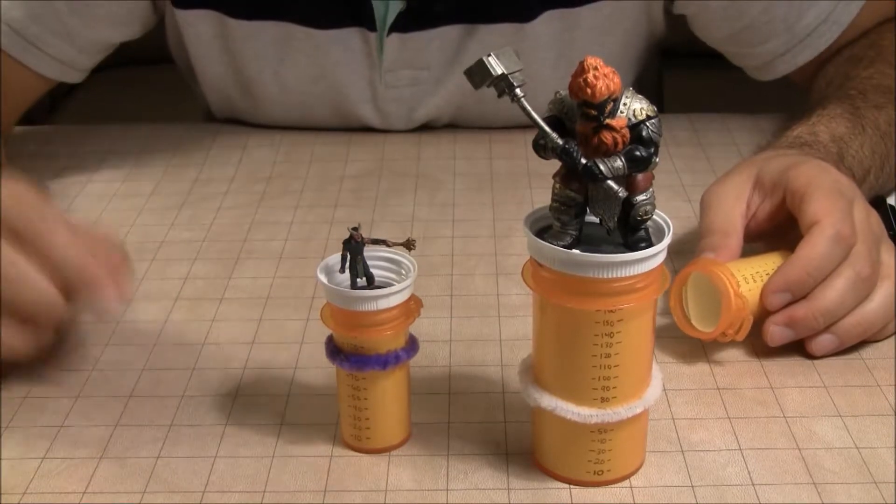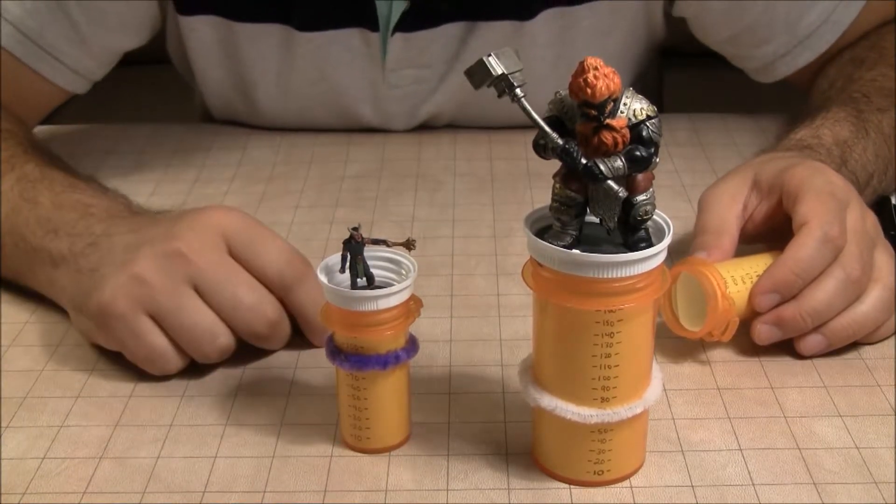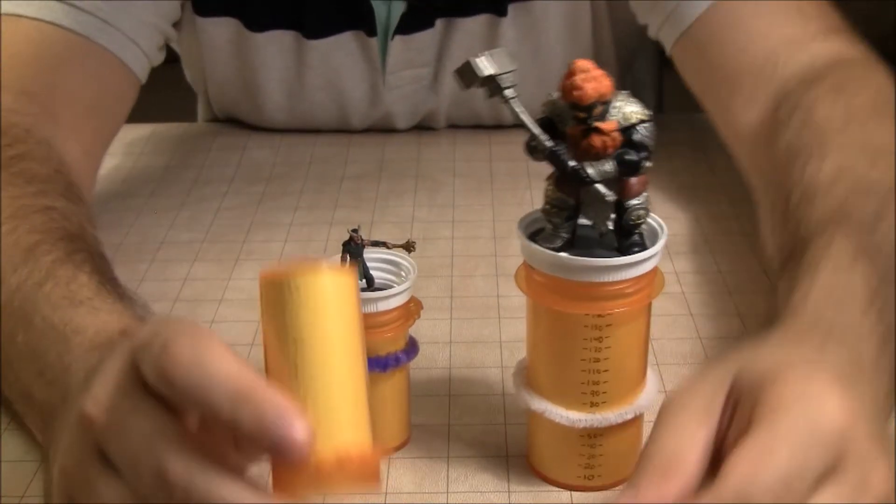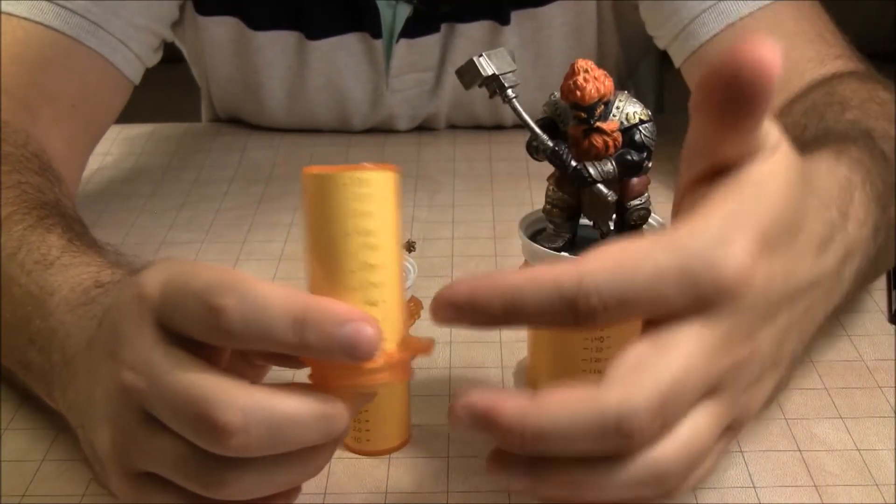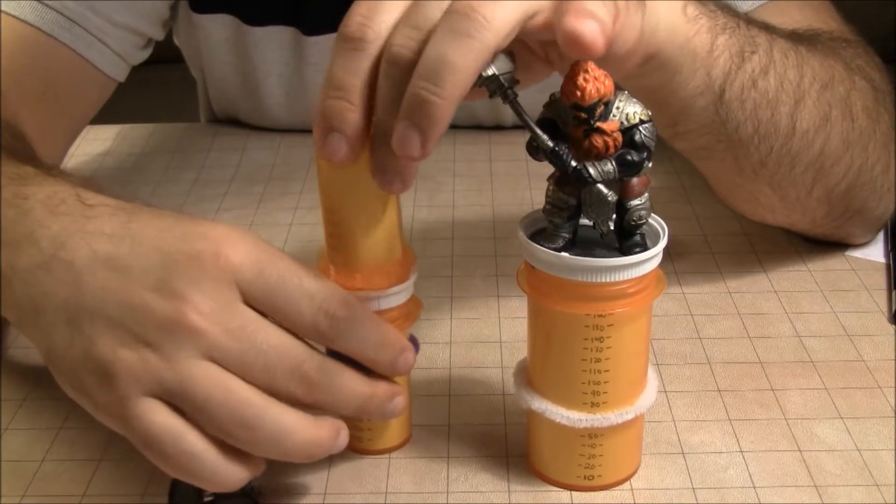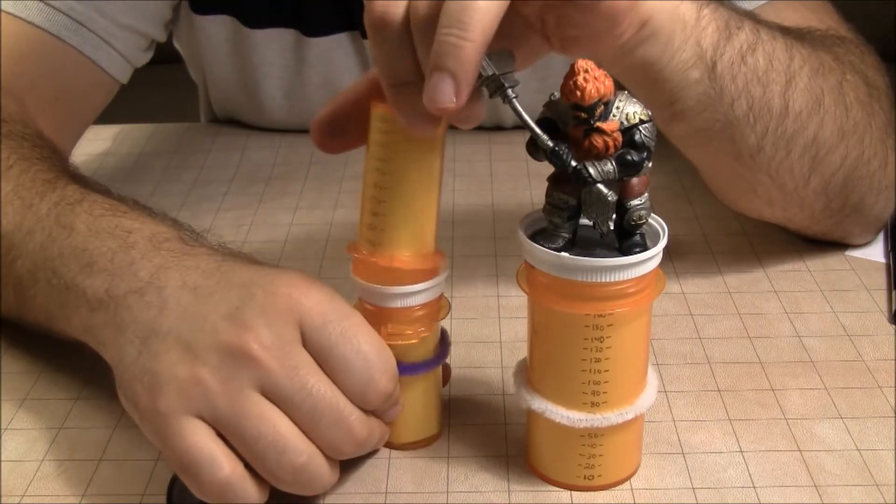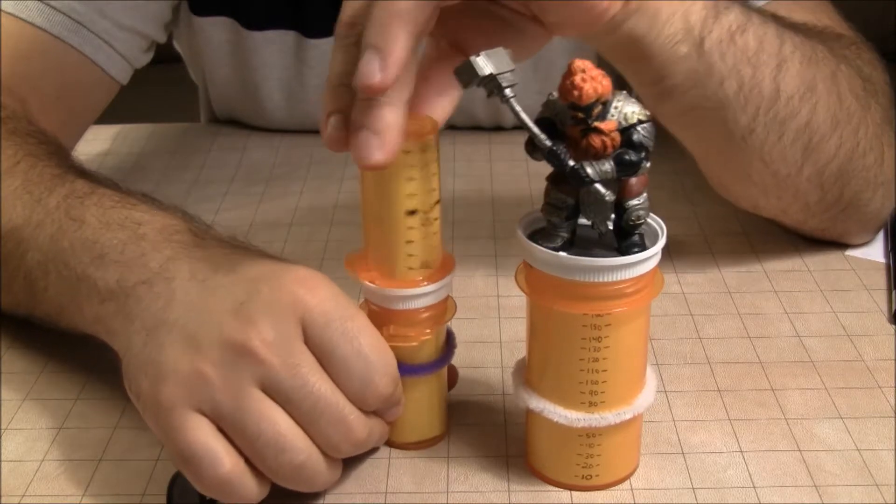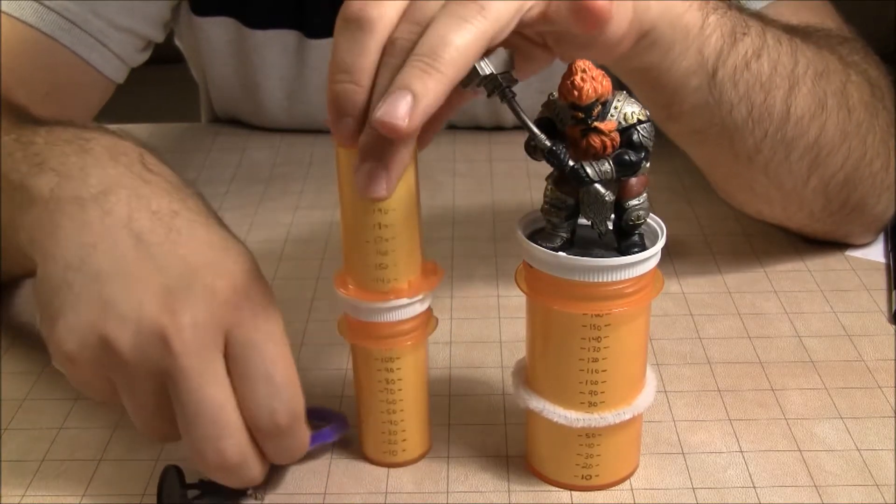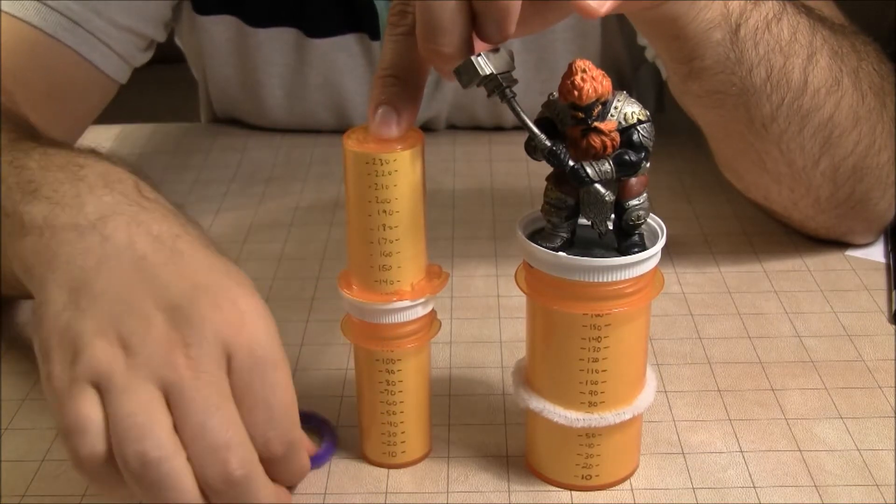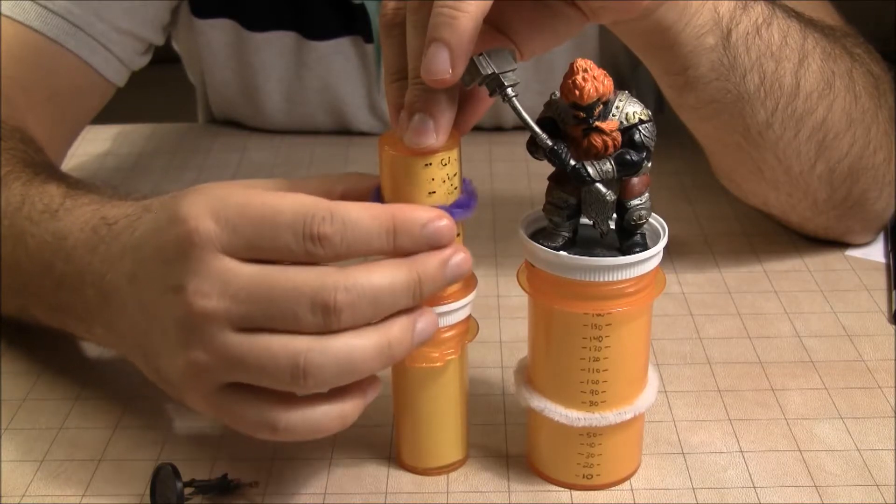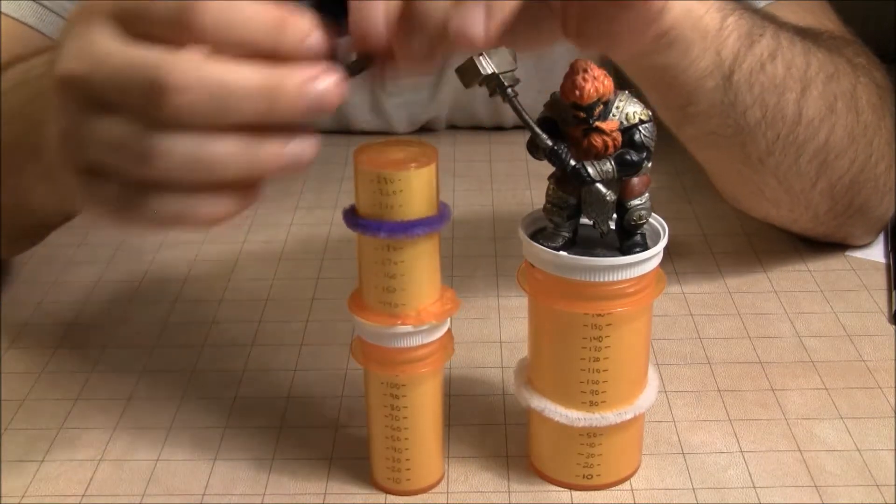And here's an extra tip. Let's say you need some more height. 120 feet not cutting it for you. Simply take another 10 dram vial, add another gauge, and slide it into the top. And here you have more heights. So now my tiefling is going to be hovering up at about 200 feet.